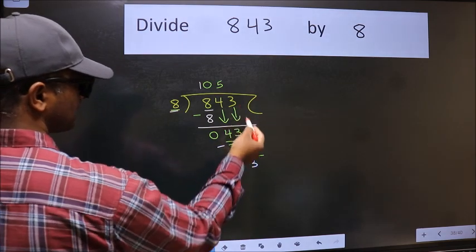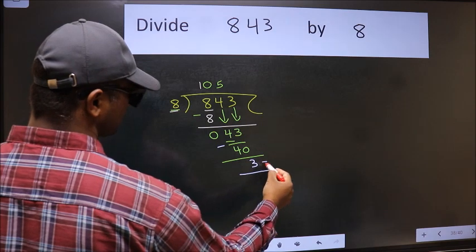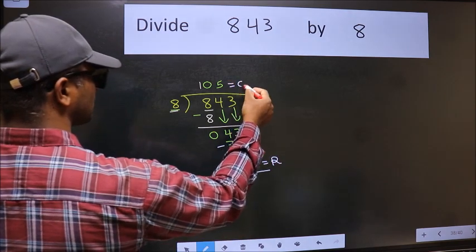No more numbers to bring it down, so we stop here. This is our remainder and this is our quotient.